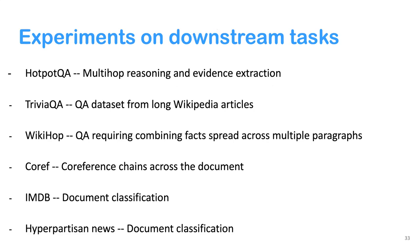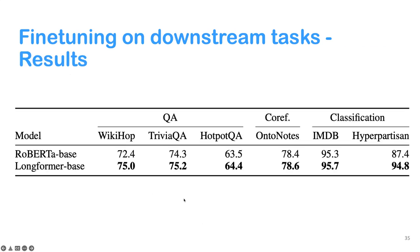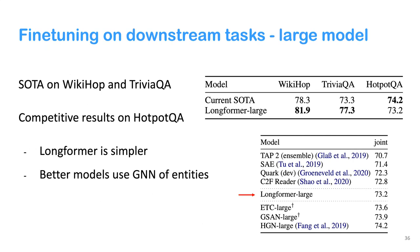We evaluated on downstream tasks including HotpotQA, TriviaQA, WikiHop, coreference, and IMDB. Using global attention on question answering and coreference tasks, and comparing with a sliding window RoBERTa-based model, we get significant improvements on many tasks. For the larger model compared with state-of-the-art at the time, we got significant improvements on some datasets while getting competitive performance on HotpotQA. Some better-performing models used additional information like entity graphs that Longformer didn't use.